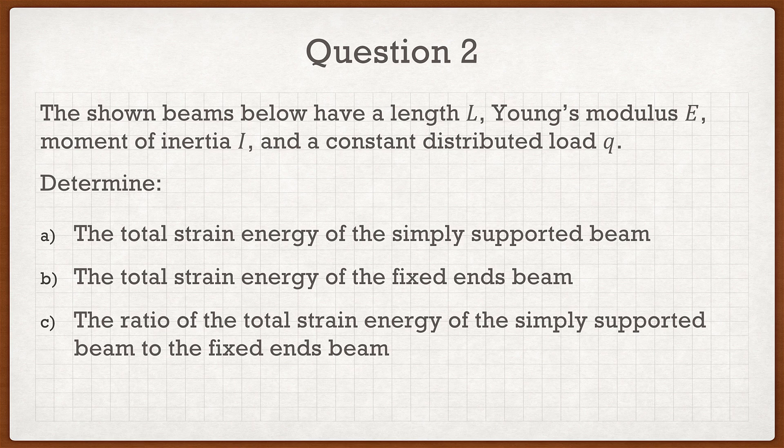If we look at question number 2, it says the shown beams below have a length L, Young's modulus E, moments of inertia I, and are subjected to a constant distributed load Q. The beams are the same beams from assignment number 7 — the first beam is simply supported, while the second beam has fixed ends. Part A asks for the total strain energy of the simply supported beam, part B asks for the total strain energy of the fixed ends beam, and part C asks for the ratio of the two.